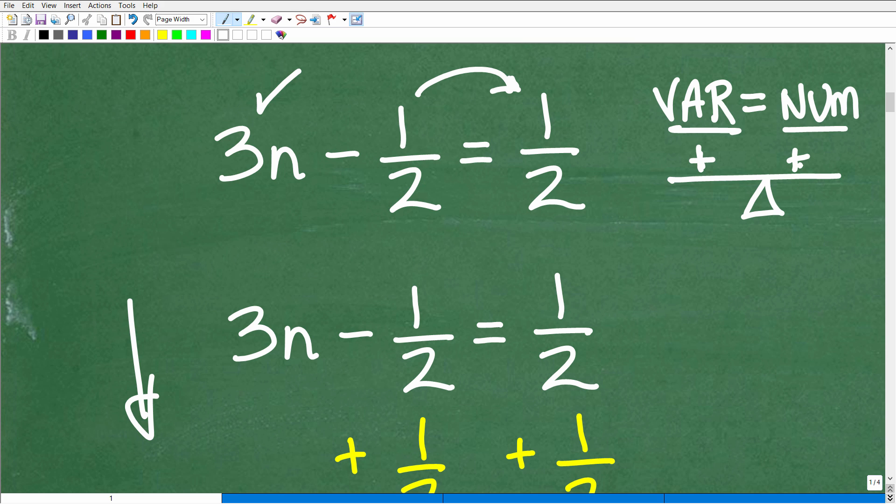That equation always has to remain in balance. You want to subtract a number on the left-hand side? No big deal, just as long as you subtract that same number on the right-hand side. And this goes also with variable terms.